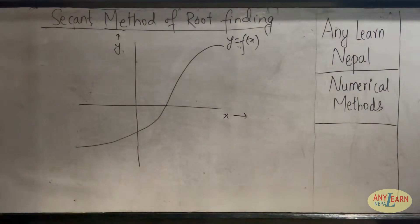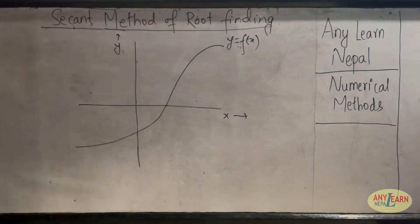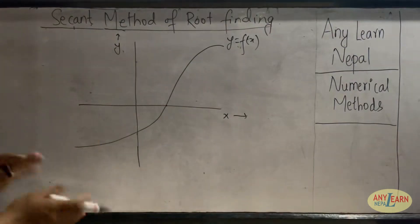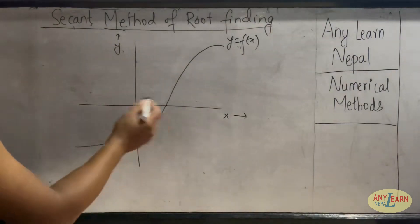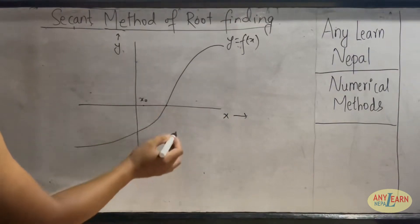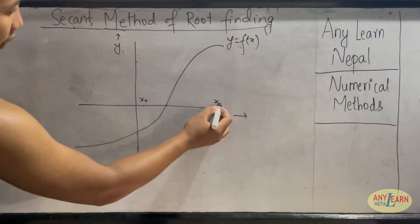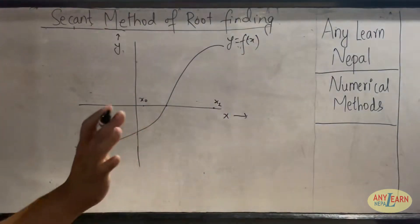To find that, what the secant method really does is it first takes two initial points which may or may not be near to the actual root. So let's say this point I am going to select x0, and let's say this is another point x1. You can select anywhere on the x-axis.